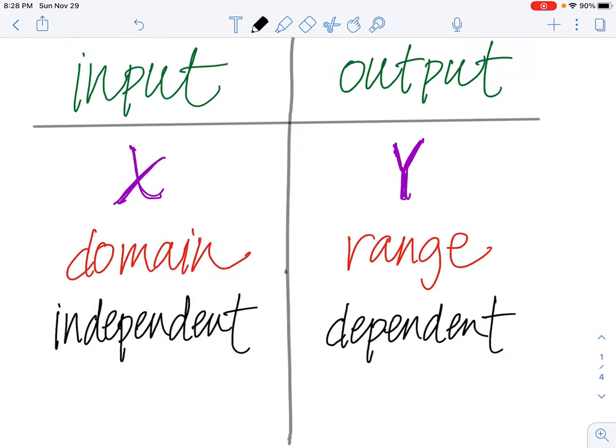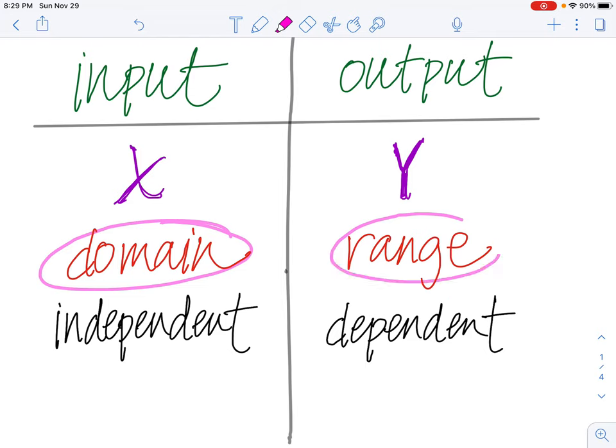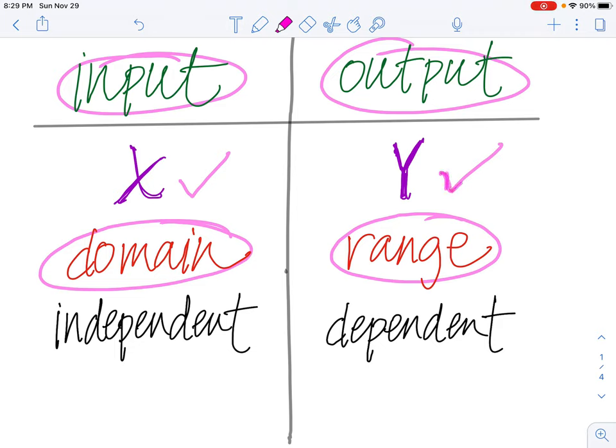So we have an input and an output, an x and a y. In math, they're called the domain and the range. And in science, they're called the independent and dependent variable. Now we probably won't use those science terms very much, but we will definitely use these terms: domain and range, input and output, and we will use the x and the y variables.